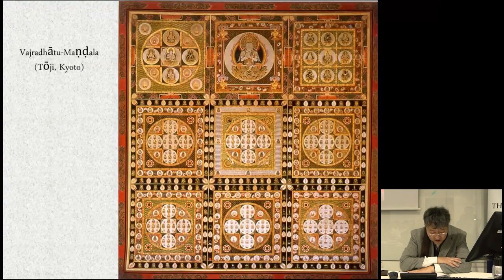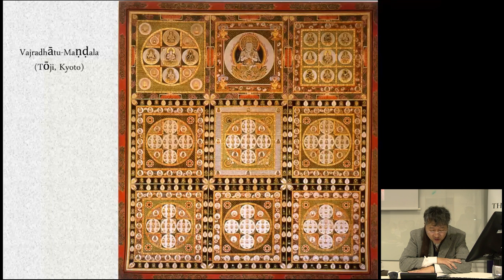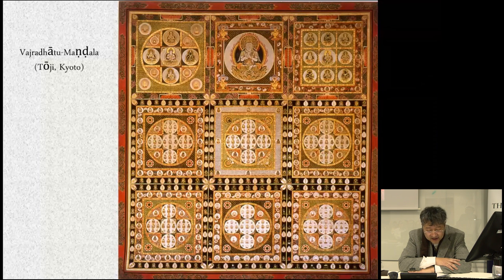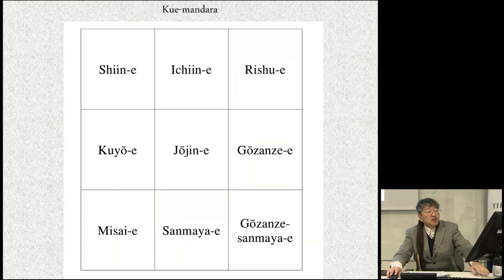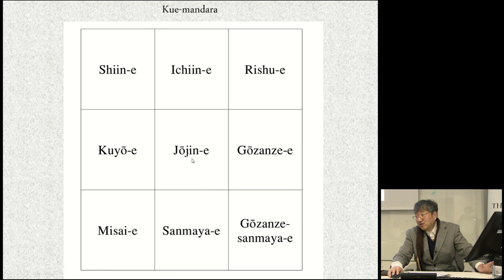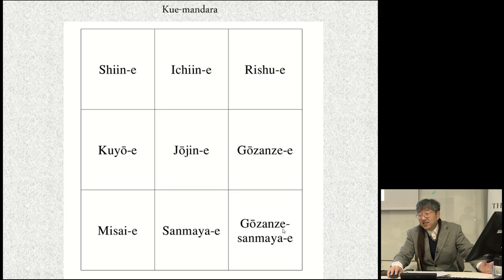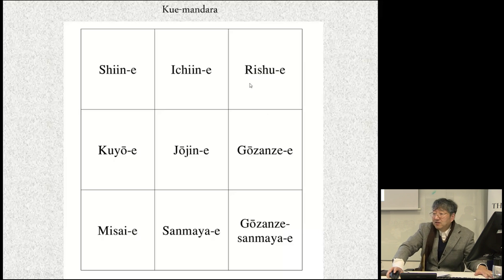The next topic is the Vajradhatu Mandala. The Kue Mandala — the current version of the Vajradhatu Mandala in Sino-Japanese Buddhism — combined the six mandalas described in the Vajradhatu section with the first two mandalas described in the Trailokavijaya section, and one adapted from the Prajnaparamita Naya Sutra. In the Kue Mandala, the six mandalas are explained in the first part — the Vajradhatu section of the Sarvatathagata Tattvasangraha — while Trailokavijaya and its Samaya versions are explained in the second chapter, and one mandala comes from the Prajnaparamita Naya Sutra.